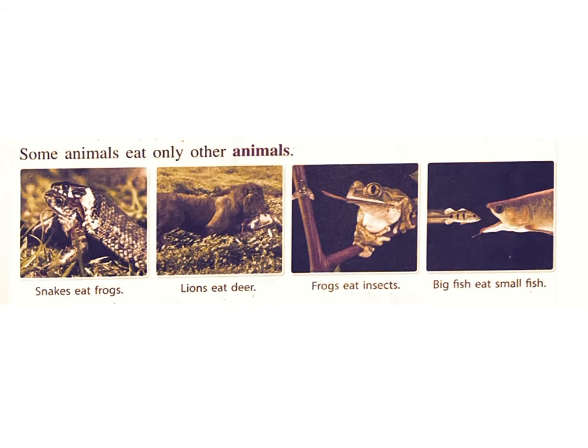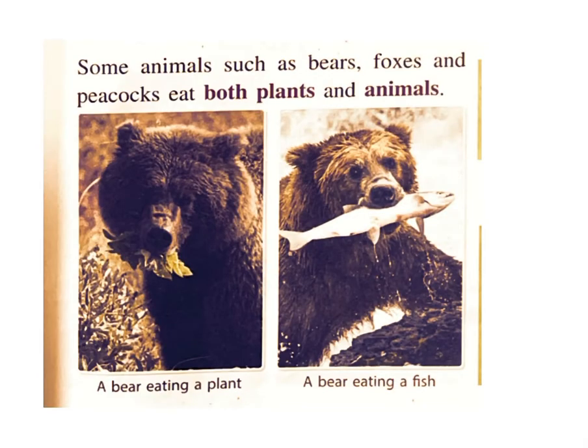Some animals eat only other animals. Snakes eat frogs. Lions eat deer. Frogs eat insects. Big fish eat small fish. Some animals such as bears, foxes, and peacocks eat both plants and animals.